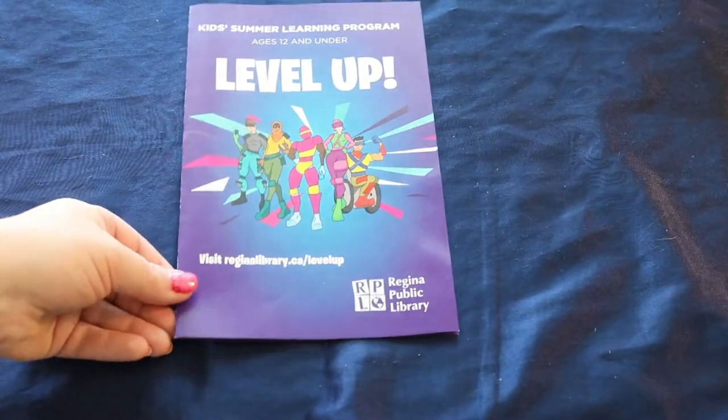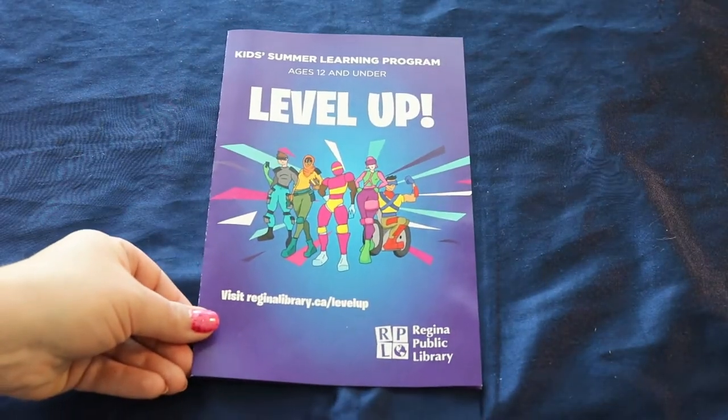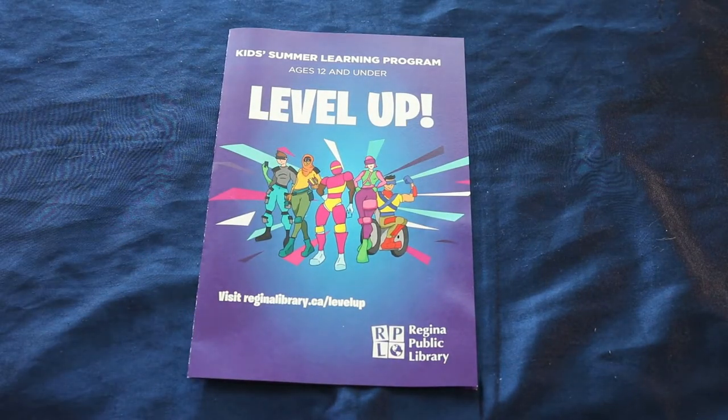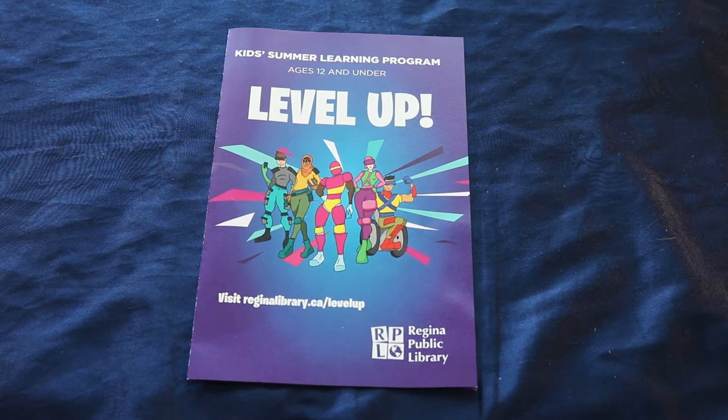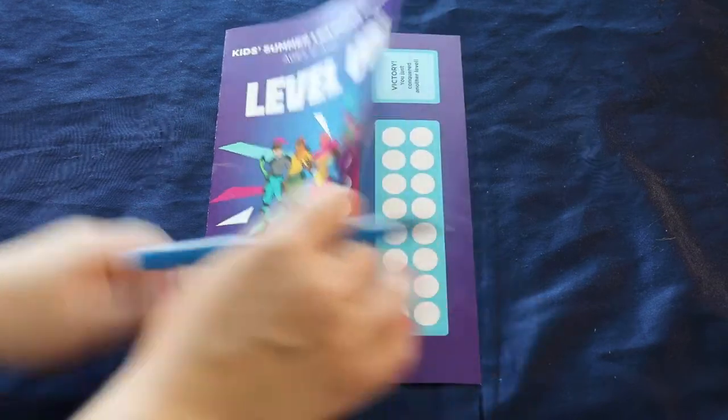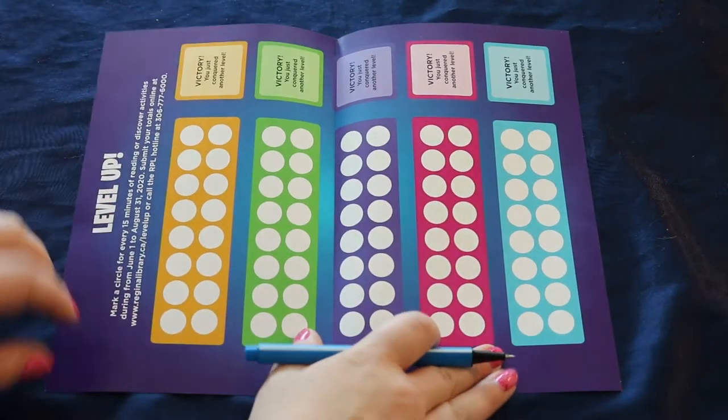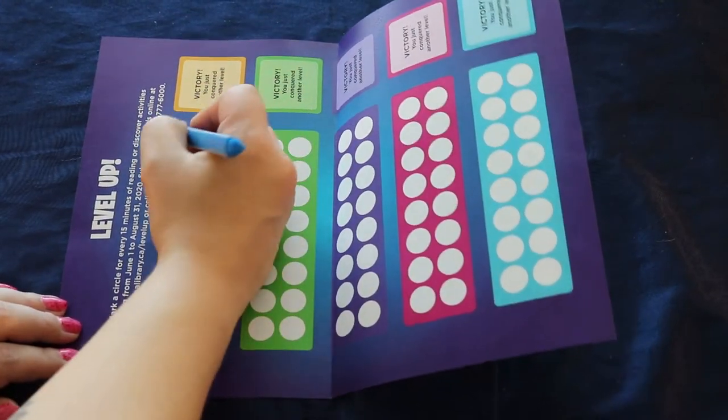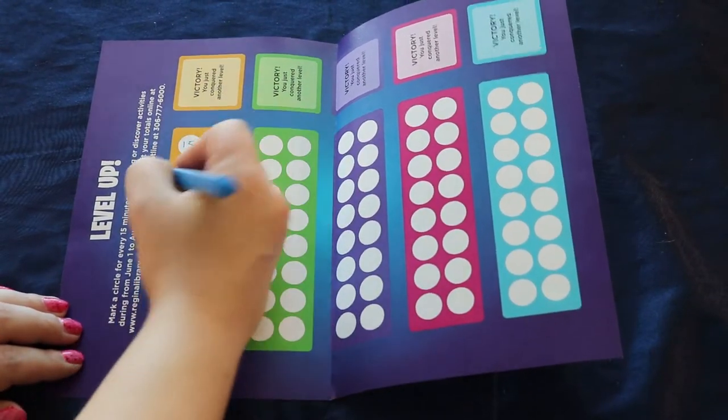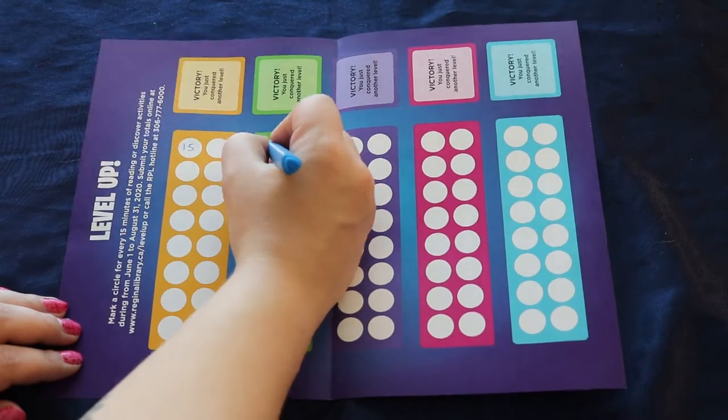Today I would love to encourage you to join Regina Public Library's Level Up program and spend your summer reading, learning, and exploring. Kids 12 and under can enter to win fantastic prizes just by recording the amount of time spent reading and participating in Discover activities.